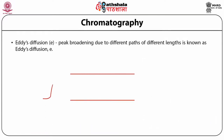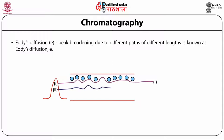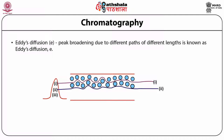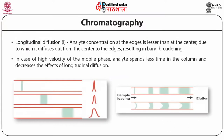An important factor which affects band broadening is eddy diffusion. In eddy diffusion, there are different paths taken by a molecule to pass through the column. Peak broadening is due to different paths of different lengths taken by an analyte, and this phenomenon is known as eddy diffusion.